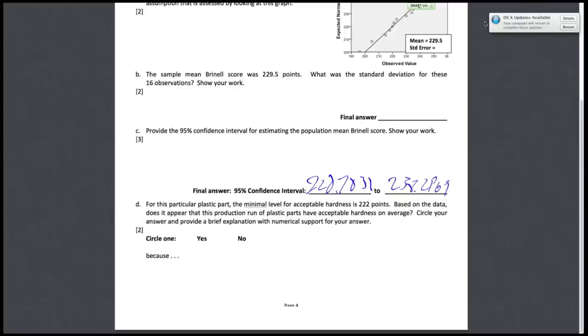So recall that the previous answer was 220.7 to 238.2969. Because the value of 222 is the minimal level, we want to be assured that the average hardness will be at 222 or any value above 222. But you'll note that the confidence interval starts at 220.7 and goes to 238. The confidence interval includes 222 as well as values below 222. So, for example, 220.7, 221, 221.5. And because the interval contains values below 222...